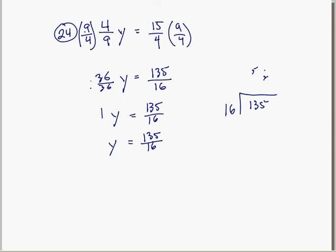So here, 6 times 8 is 48. Put down your 4. 1 times 8 is 8, plus 4 more is 12. And then this is 7. So this is the same as y is equal to 8 and 7 sixteenths.